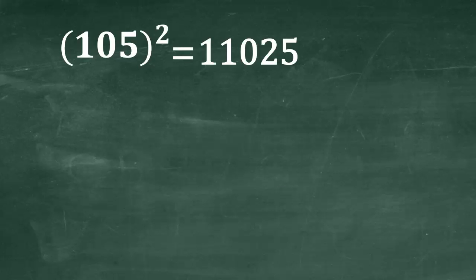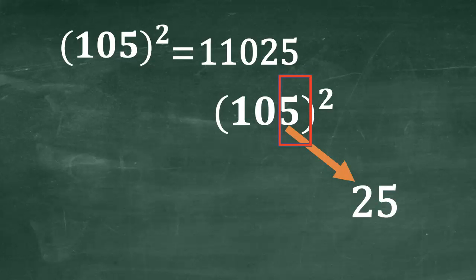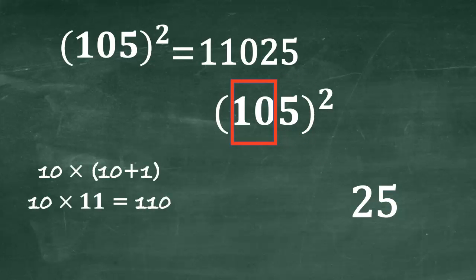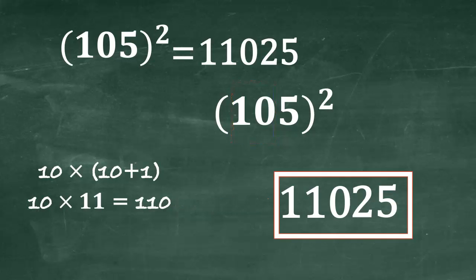Correct. Harry, square of 105 is 11,025, square of 5 is 25 and remaining is 10, multiply 10 and 1 more than 10, that is 10 into 11, is 110. So the answer is 11,025. I hope it's clear.